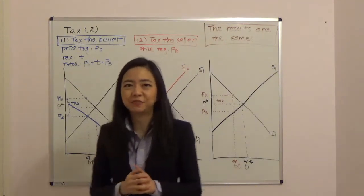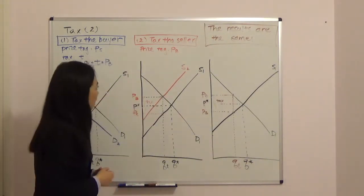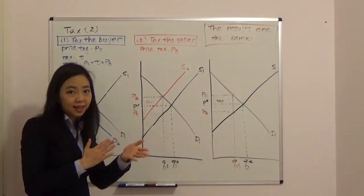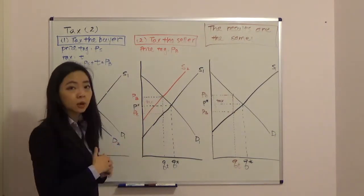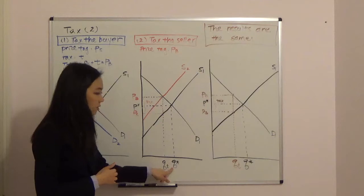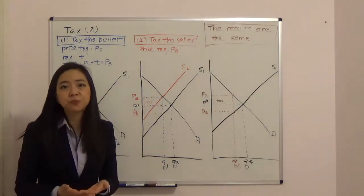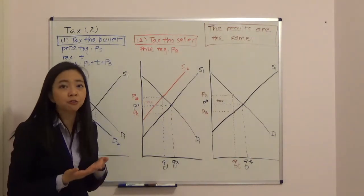Now what happens if the government tax the seller? So in that case, you can see before tax, our equilibrium price and quantity was P star and Q star, just the same as before. And now the government is going to impose the tax on the seller.